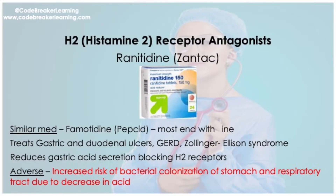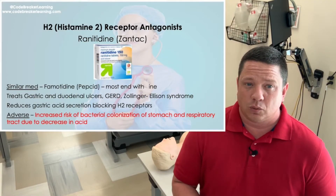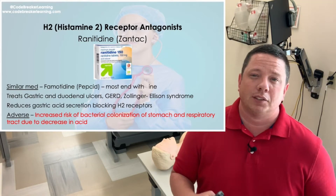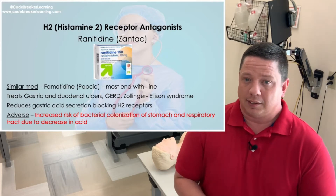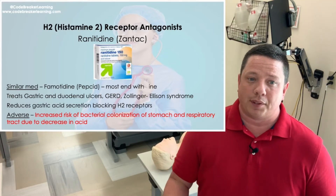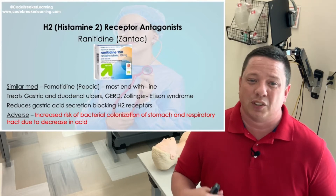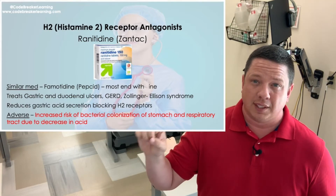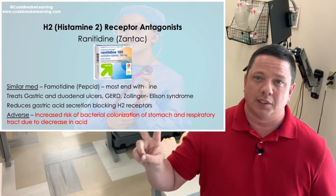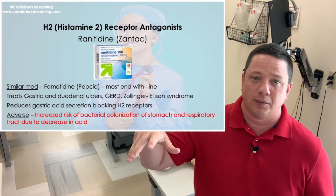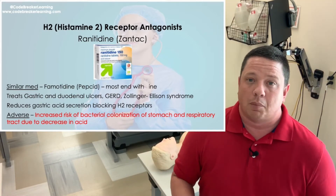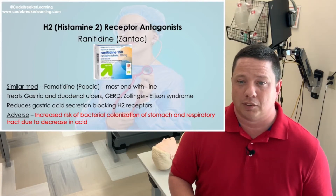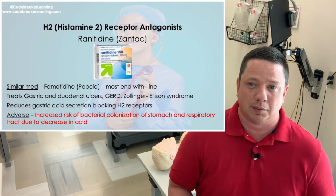The next medication is ranitidine, or Zantac — also famotidine, known as Pepcid. These are H2 receptor antagonists. Most of them end in '-idine.' This class treats gastric and duodenal ulcers and reduces gastric acid secretions by blocking H2 receptors. So sucralfate coats, antacids neutralize the acid, and ranitidine decreases acid production. However, the decrease in acid changes pH levels and increases risk of bacterial colonization or stomach and respiratory tract infections, since acid is a natural defense mechanism.